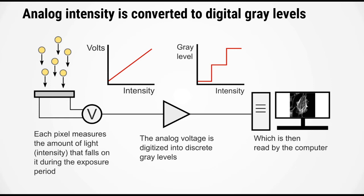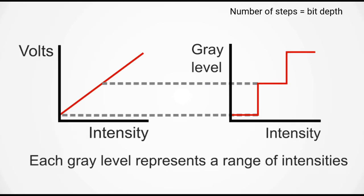The voltage is then read out and digitized using an analog to digital converter. This device converts the continuous voltage into discrete levels, which are called gray levels. This forms the digital data, which is then read by the computer. Now it is important to note that due to the way the analog to digital converter works, a range of intensities are converted into a single gray level. In other words, you can think of each gray level as a bin of intensities falling on the pixel.